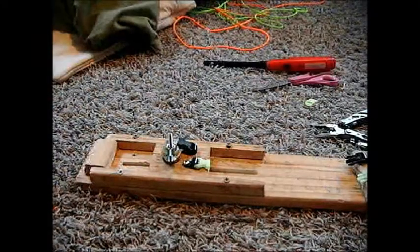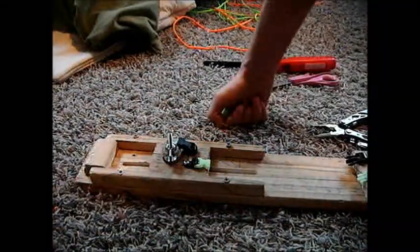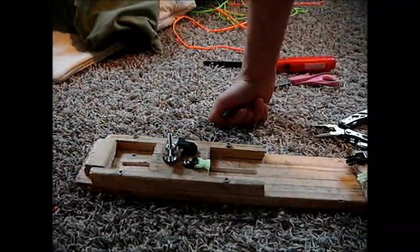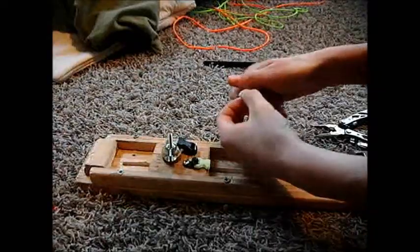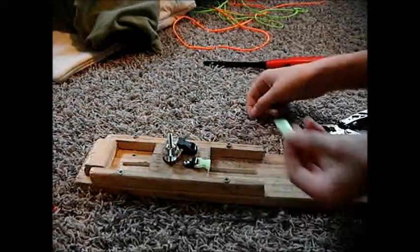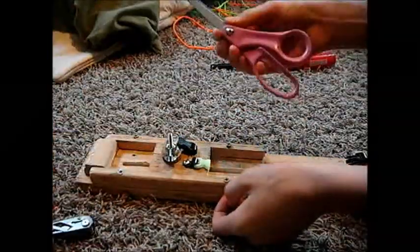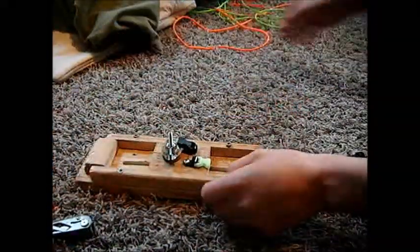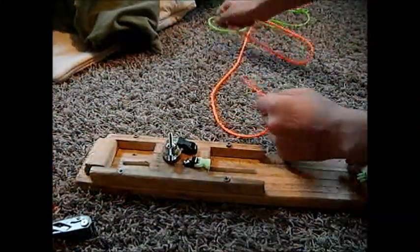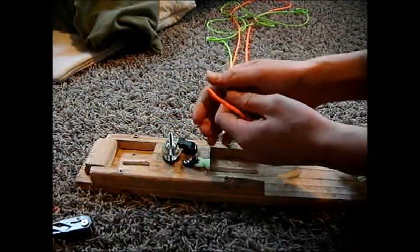Hey guys, this is my second paracord bracelet instruction video, and today we're going to be doing a trilobite. What we need is a buckle, pliers, scissors, lighter, and your paracord—right here, about eight feet.